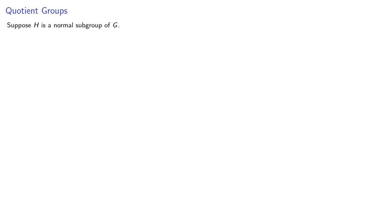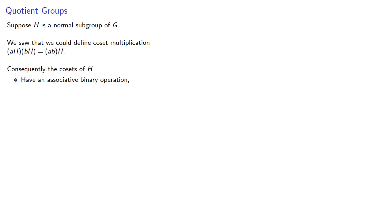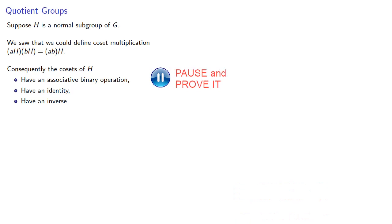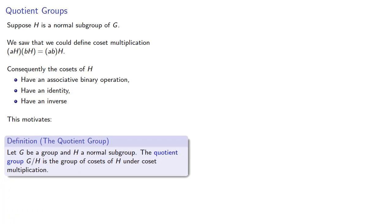Suppose H is a normal subgroup of G. We saw that we could define coset multiplication: AH·BH = ABH. Consequently, the cosets of H have an associative binary operation with an identity and an inverse. This motivates the following definition: let G be a group and H a normal subgroup. The quotient group G mod H is the group of cosets of H under coset multiplication.